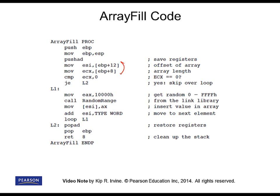These two instructions are designed to do that. We'll use ESI as an index parameter and ECX as a counter. Inside the loop, we're generating random values between 0 and FFFF hexadecimal. When we're done, we'll restore the stack and return. The 8 here tells us to remove two integer parameters from the stack so that we return the stack pointer to its original value.